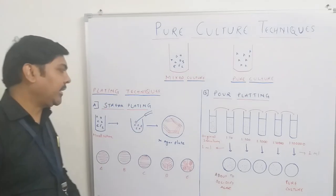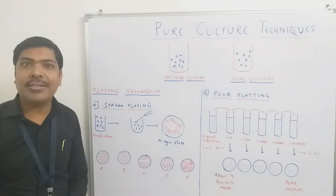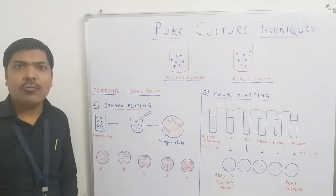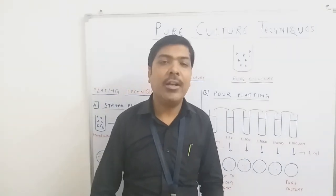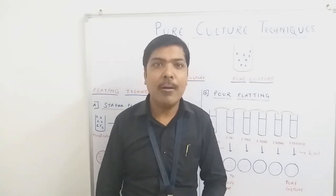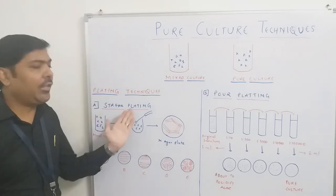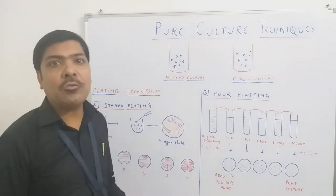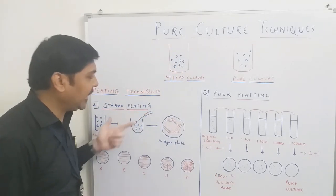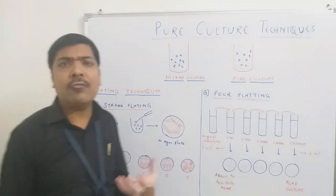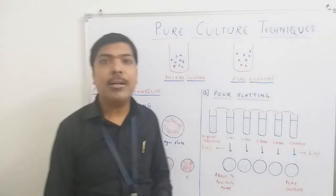The first method is called the streak plating method for obtaining pure culture. As seen in this diagram, initially we have a mixed culture — for example, water or soil brought into the laboratory — which will have different categories of bacteria. To start with the streak plating technique, the first instrument needed is the inoculation loop, which is a wire made up of nichrome. We need to go for its pre-sterilization before using it in the microbiology laboratory.